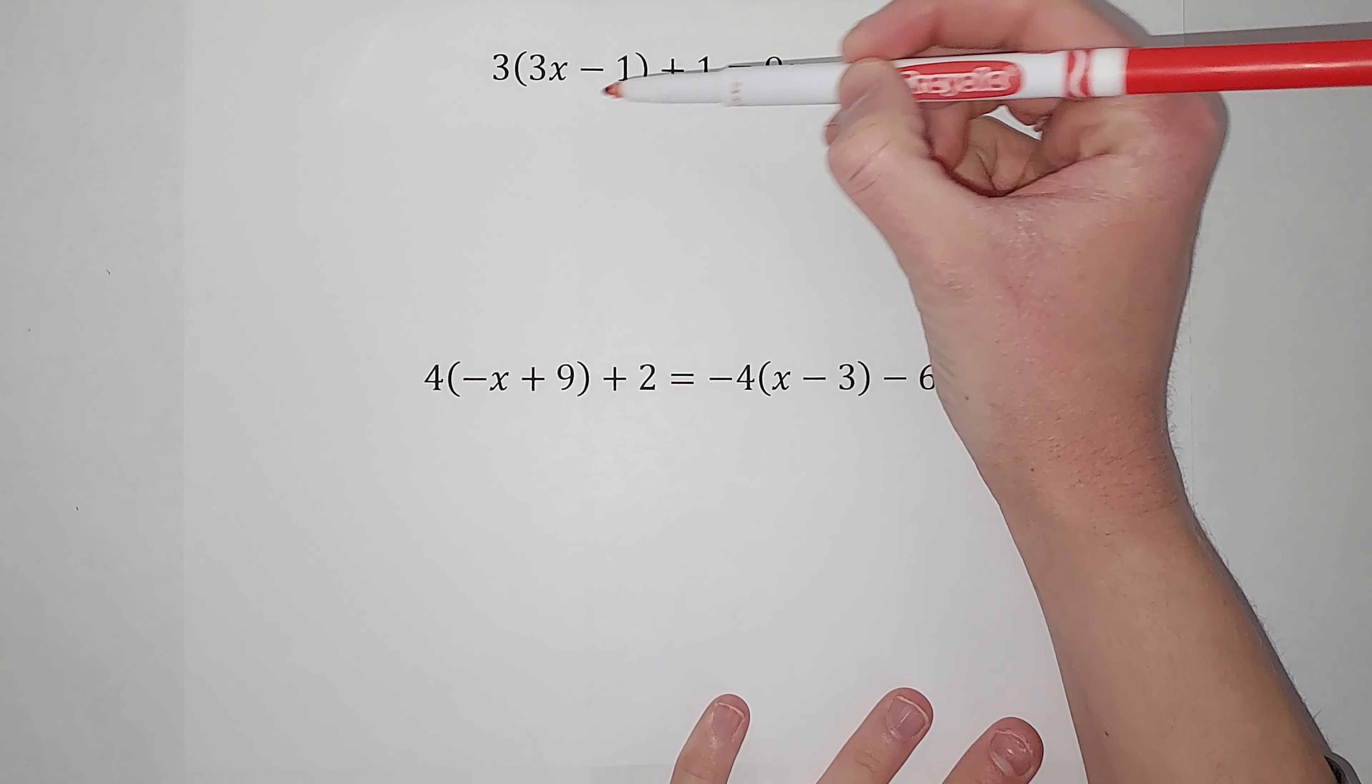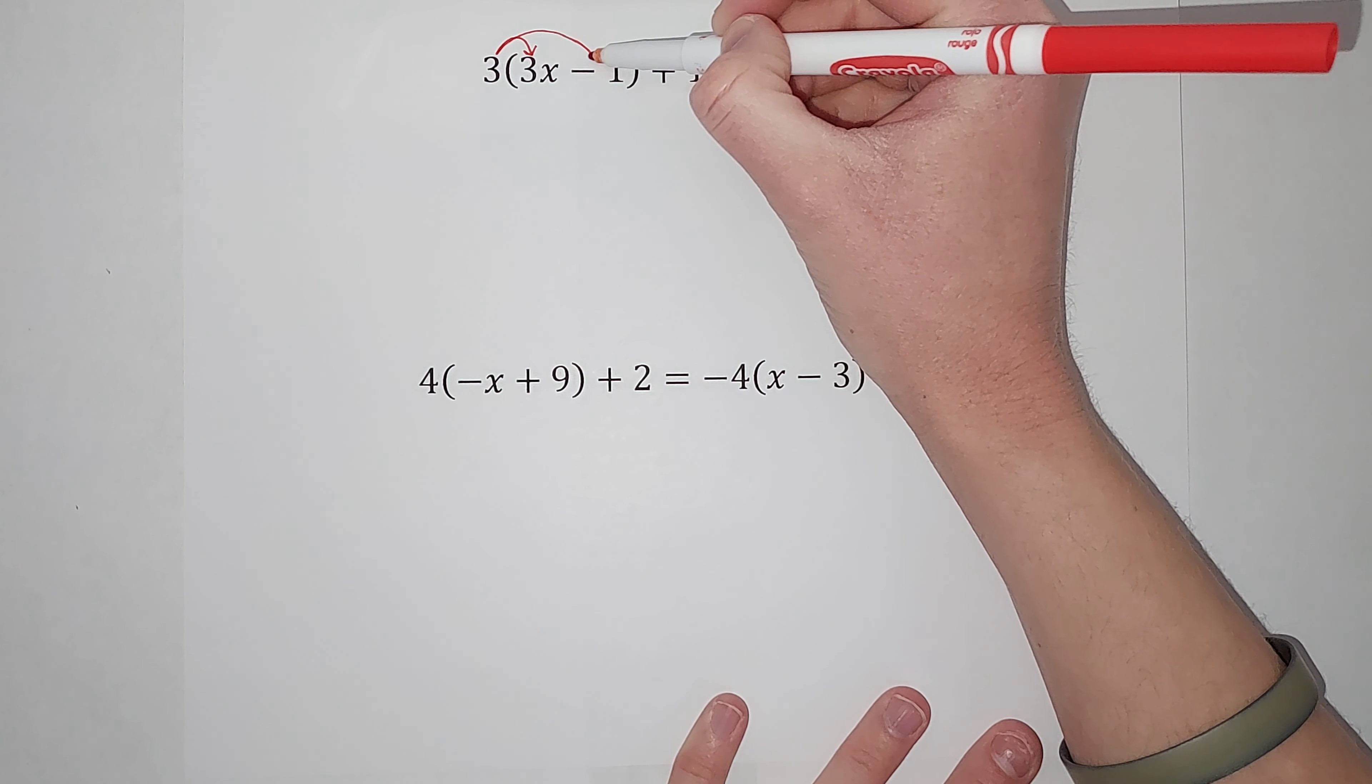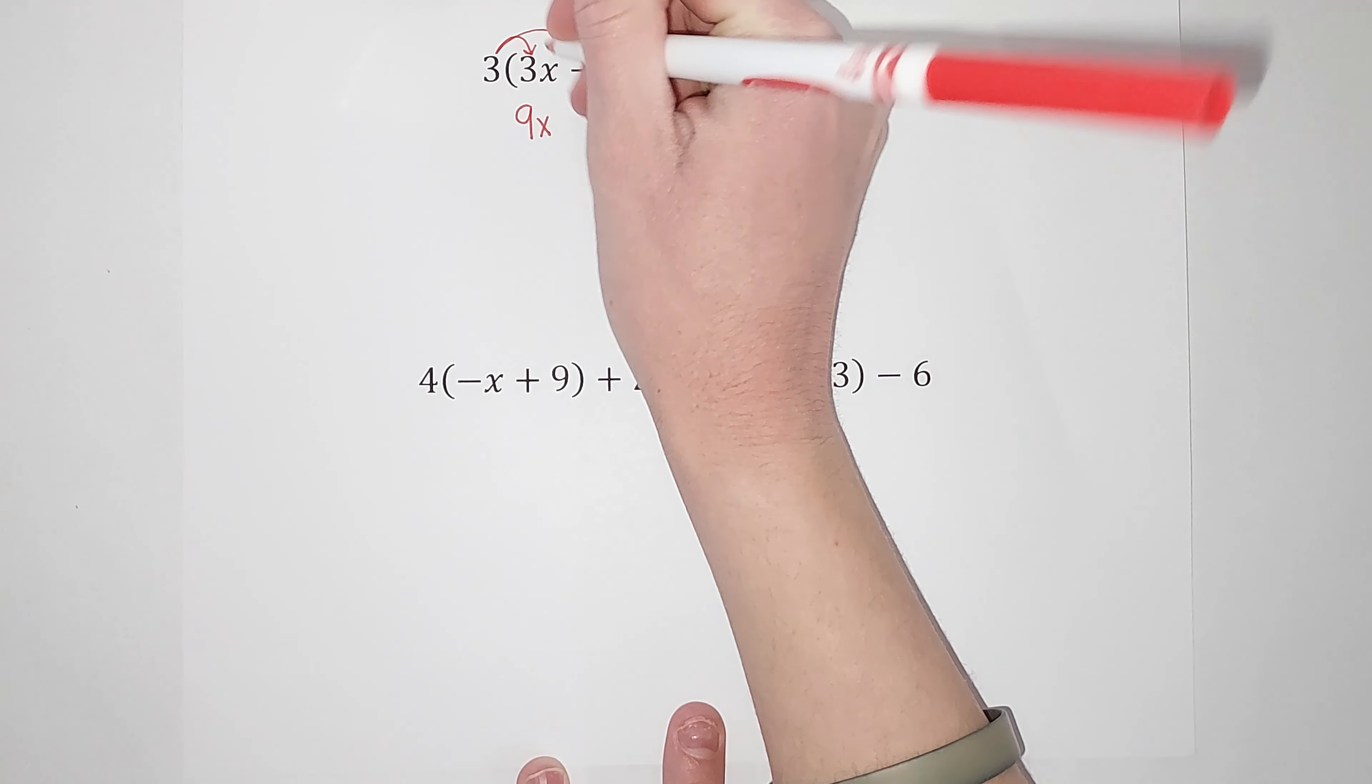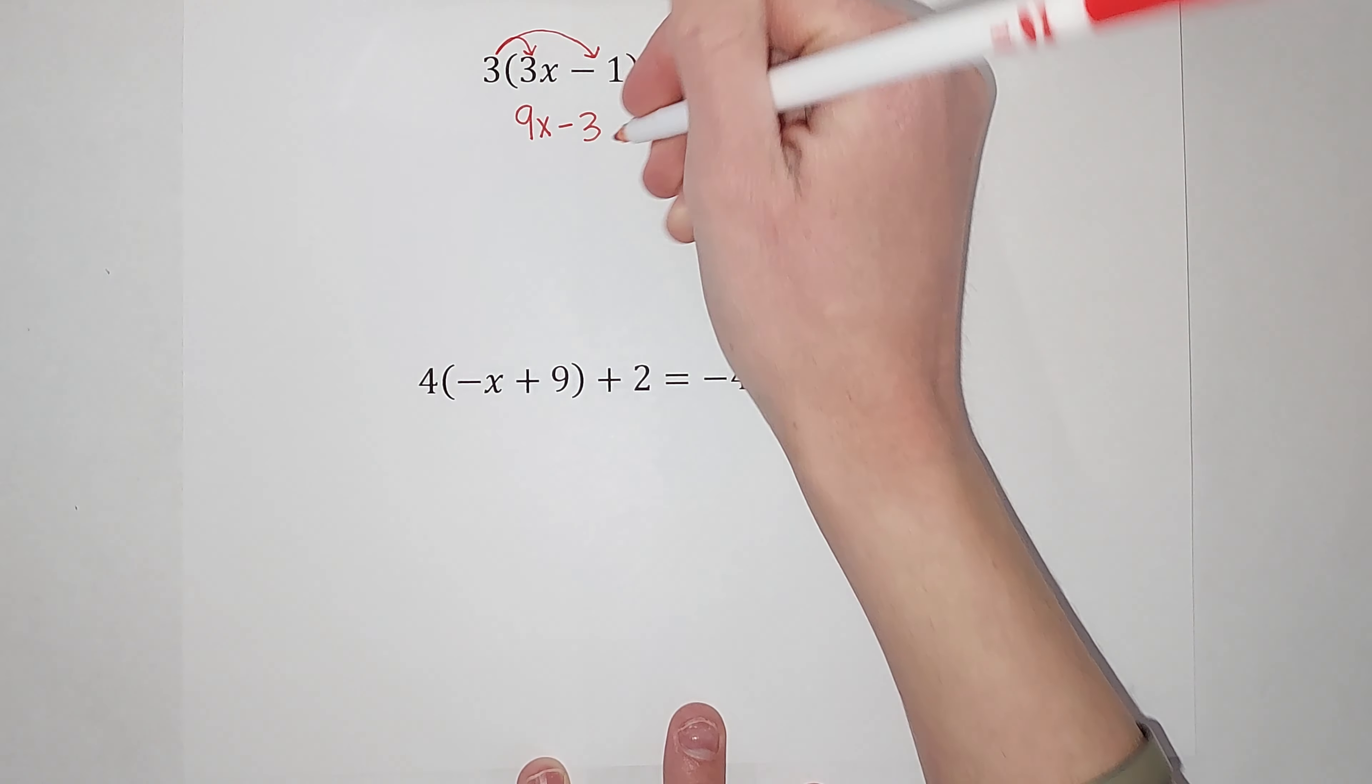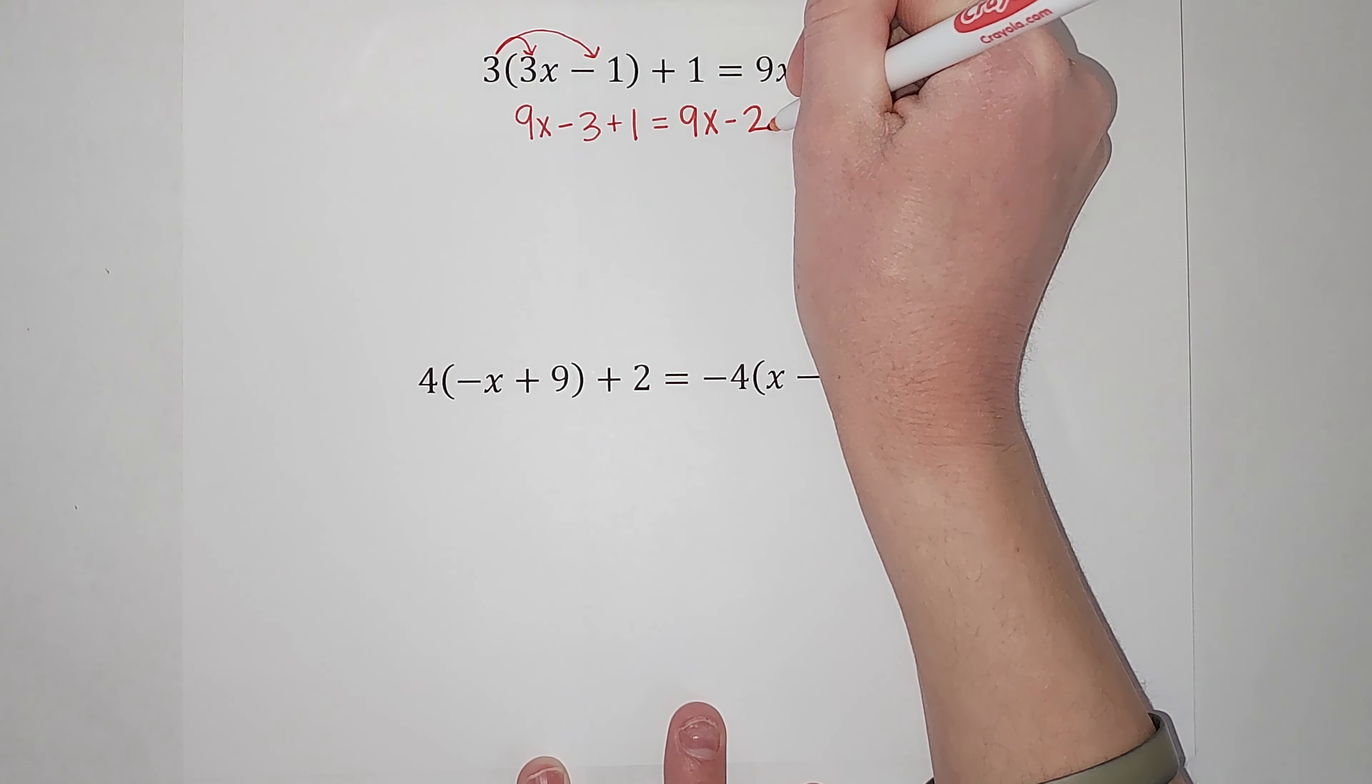So I first want to get rid of these parentheses. I can't subtract these because they're not like terms, but I can multiply this 3 in using the distributive property. So 3 times 3x gives me 9x. Oh, sorry. 3 times negative 1 gives me negative 3. I still have that plus 1. Equals, and we still have 9x minus 2 over here.